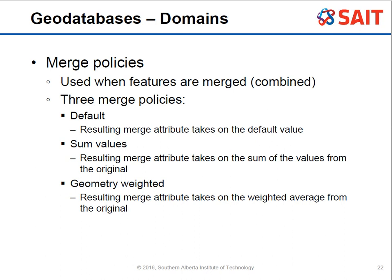Merge policies apply when features are combined together. For example, coniferous and deciduous tree polygons might be merged into just a forest. There are three merge policies: default, sum, and geometry weighted. Default assigns whatever the default value is — so combined trees might just become 'trees.' Sum adds numerical values together — 10 coniferous and 15 deciduous gives 25. Geometry weighted also adds values but weights them based on the spatial area rather than simply summing.